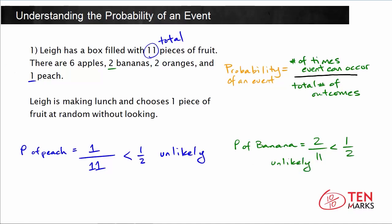What about the probability of getting a tangerine? So P of tangerine. Let me see. There's apples, bananas, oranges, and peaches. There's no tangerines. So that outcome can happen 0 times, and the total is 11. This simplifies to 0, which means this event is impossible. And it's impossible because there are no tangerines.